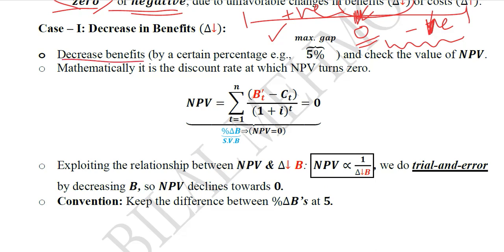The decrease in benefits — we consider that they decrease by 5%, and this is the maximum gap. We are going to use a maximum gap of 5 because this is in anticipation of the interpolation formula. In the interpolation formula, we do not exceed a gap of 5; the gap is at maximum 5. We then check the value of NPV to investigate if it has turned 0 or negative.